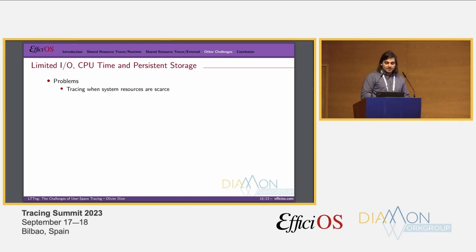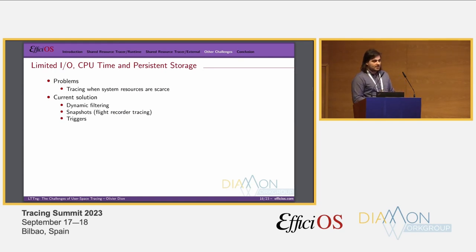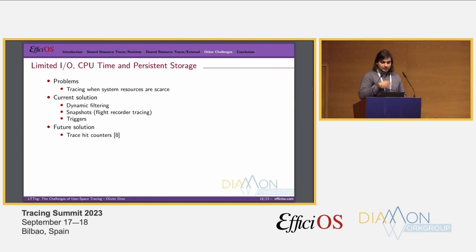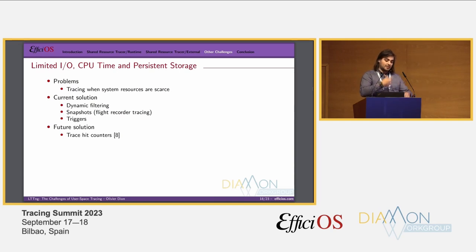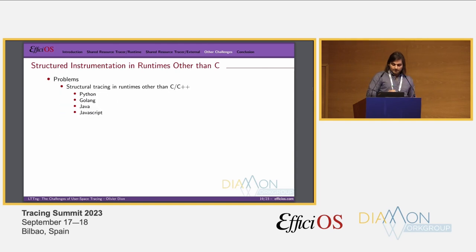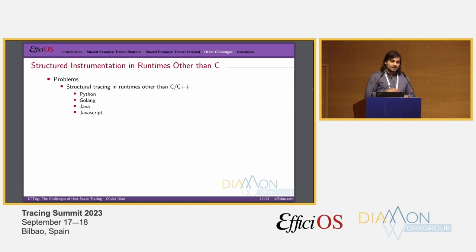Another challenge is limited I/O, CPU time, and persistent storage — for example, on embedded systems where resources are scarce. The current solution is to use dynamic filtering to reduce the amount of trace generated, snapshots using a flight recorder mode, or triggers. We are also working on implementing trace-at counters, which allow aggregation of data instead of producing a huge trace — you increment counters and can build histograms. There is also the challenge of instrumenting runtimes other than C: Python, Golang, Java, JavaScript. The future solution is to use liblttng-ust-py, presented by Mathieu.